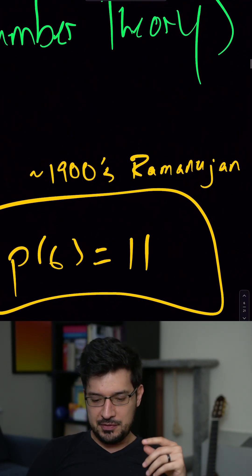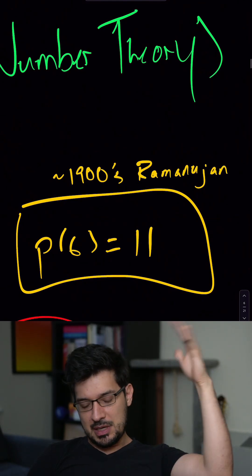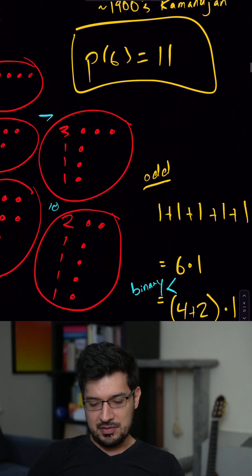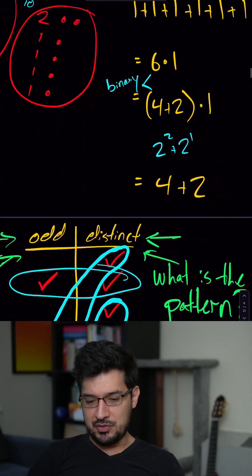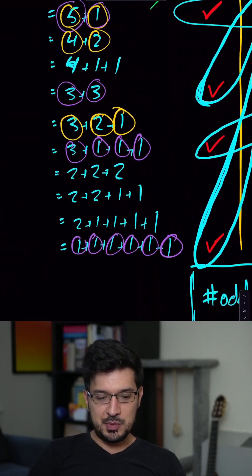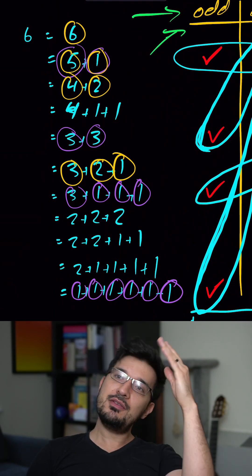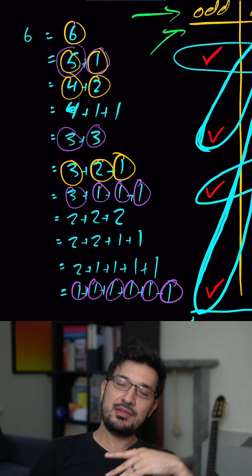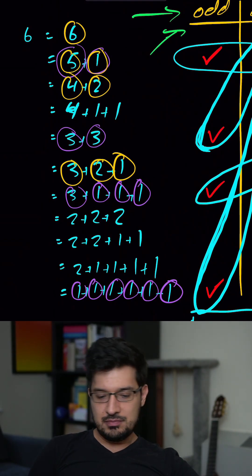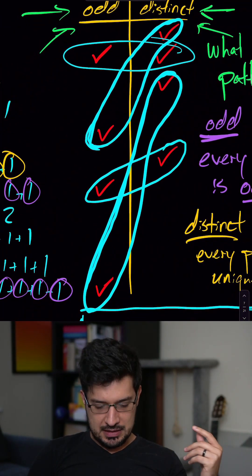There's some beautiful math we won't get into by Ramanujan that's about 100 years old — maybe in the future we might do it. So here I wrote out all of those ways using numbers instead of dots.